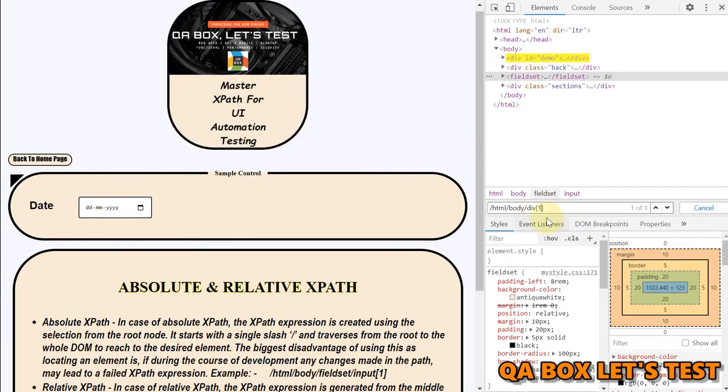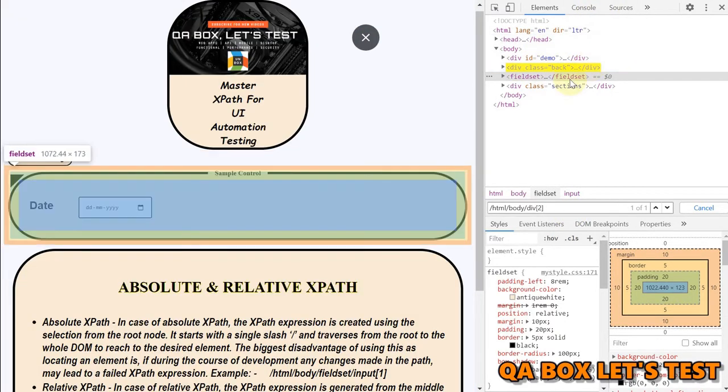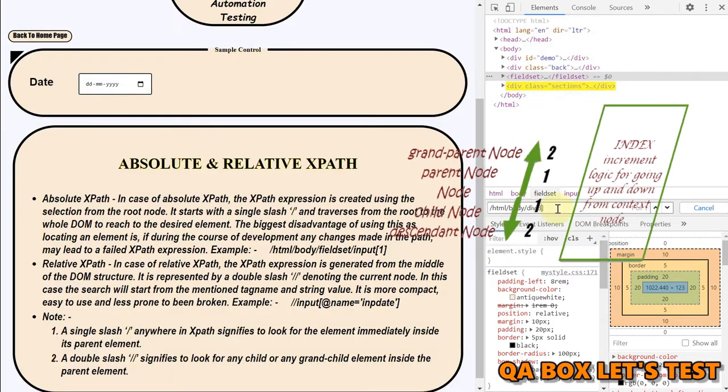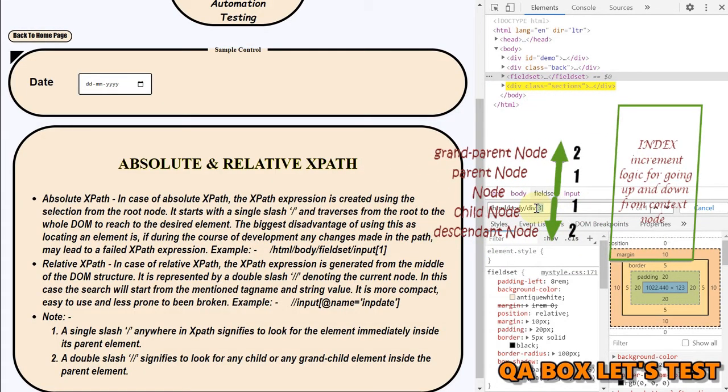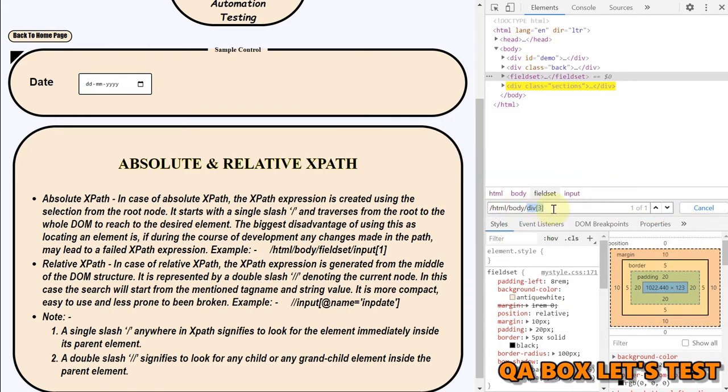So if I say first one, I'm using the index, as you could see, which is an abbreviation of position. So I can also use position, but that is something that we are going to cover in the upcoming video. This is the index that we are using. If I say two, it will move to the second one. If I say three, you see that I'm only changing the index and this is only possible because all three divs, they have the same parent.